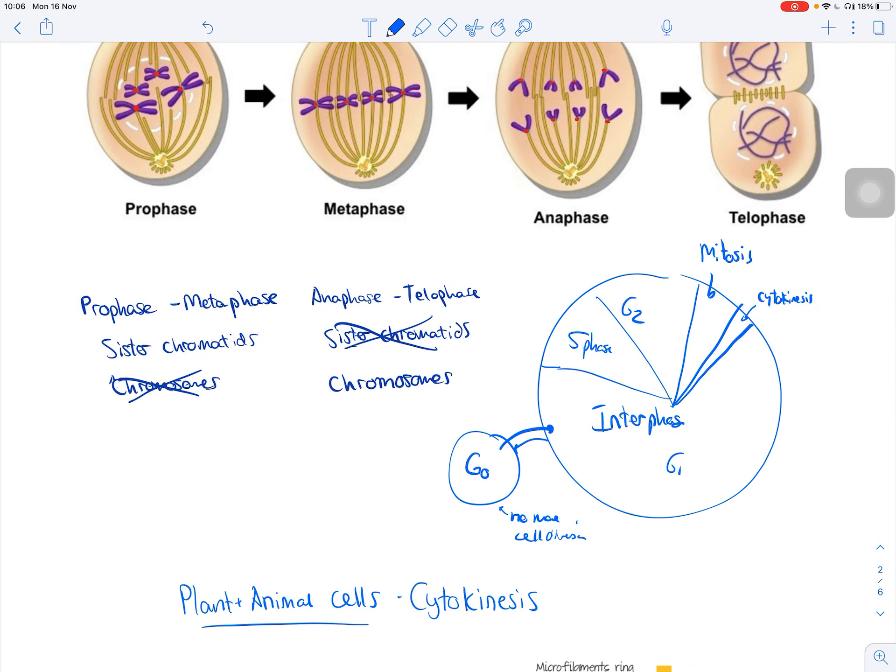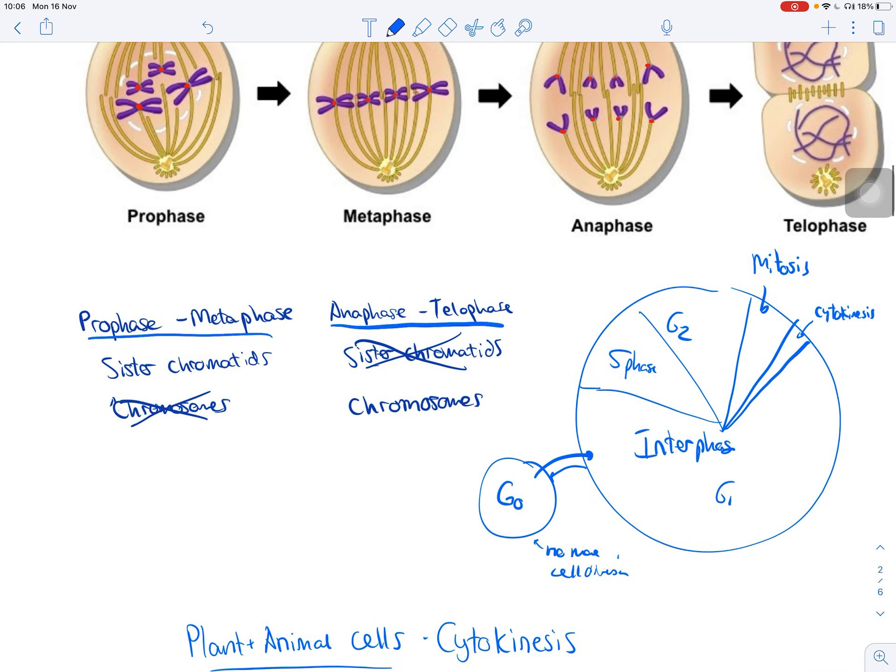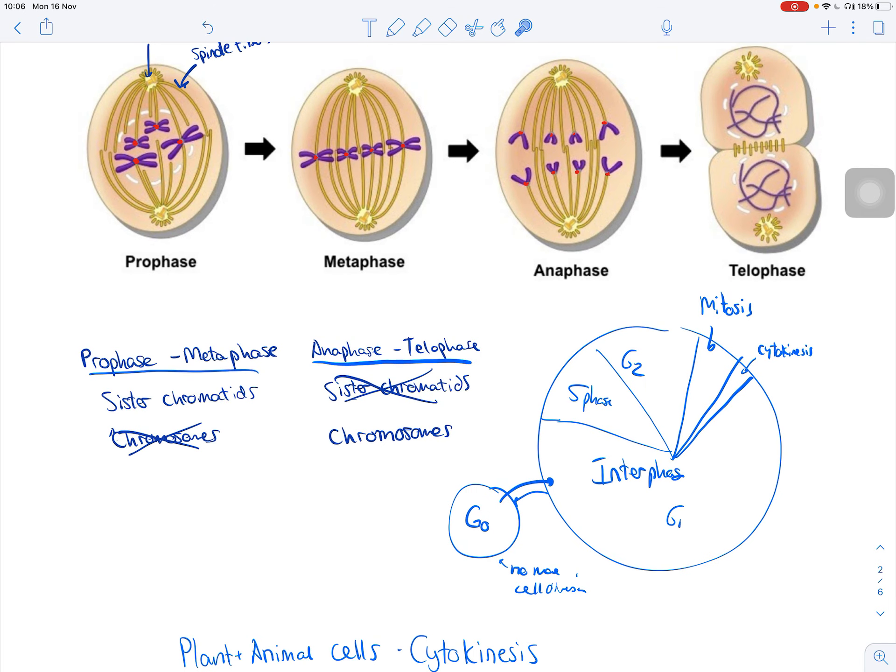A couple of notes about how we talk about these different stages. So in prophase, what sometimes you see talked about as chromosomes, we're going to call them sister chromatids. In IB land, that's how we call it. And remember a sister chromatid, you divide it into two, the sides, they're identical, right? Because that DNA was replicated during S phase.